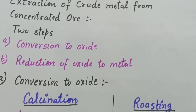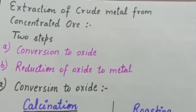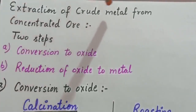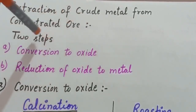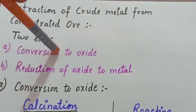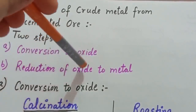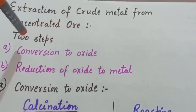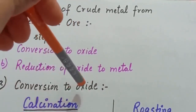We will extract crude metal from concentrated ore, because the metal in concentrated ore is still present in combined form. The next step is extraction of crude metal from concentrated ore. In this we have two steps: first is conversion of concentrated ore to its oxide, and second is reduction of that oxide to metal.